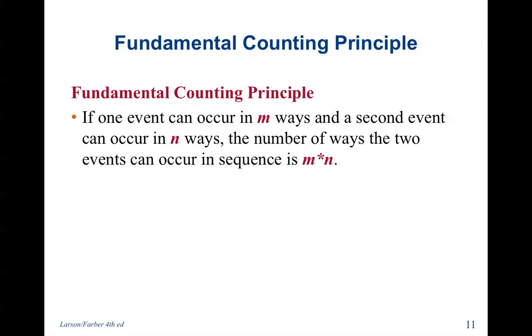The fundamental counting principle. If one event can occur in M ways and the second event can occur in N ways, then the number of the two events occurring in a sequence is M times N. So like with our previous example, there were two choices with head and tail, and there were six choices on a die, so two times six gave us the twelve outcomes. This can be extended for any number of events occurring in a sequence.